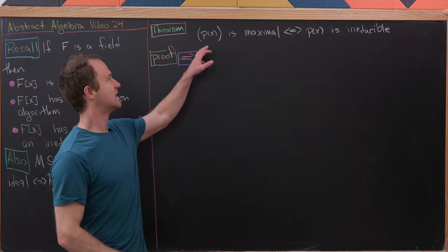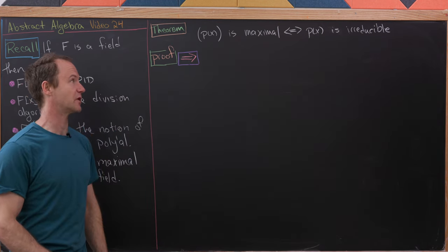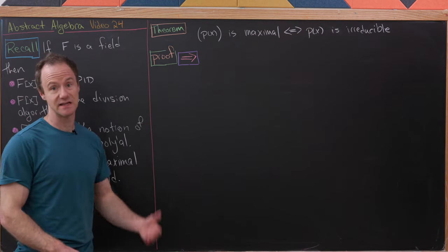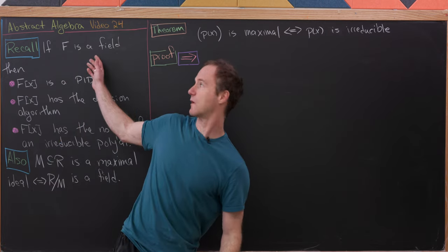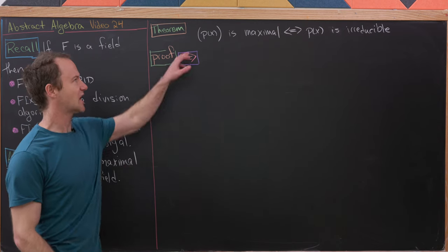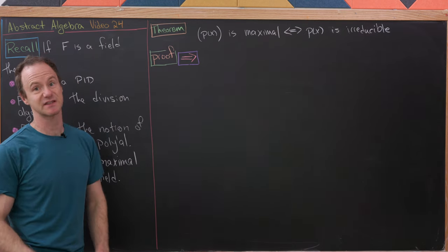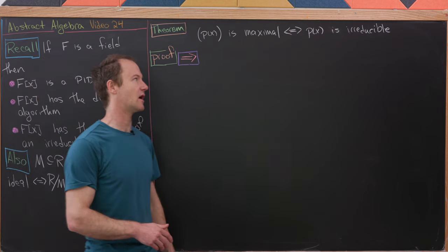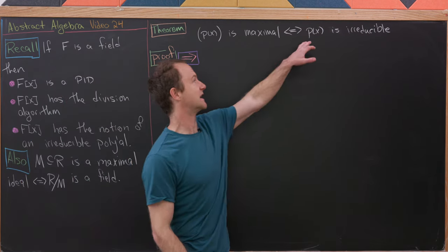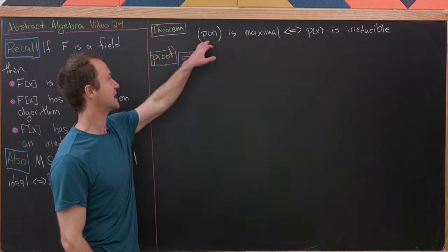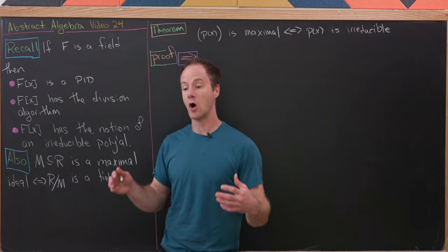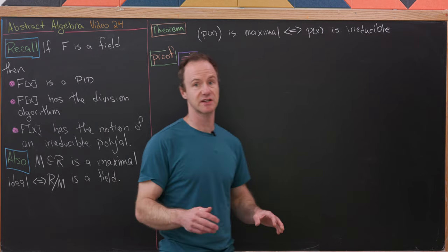Now let's look at our big result: the principal ideal generated by the polynomial P(X) is maximal if and only if P(X) is an irreducible polynomial — and we're working within F[X] throughout this video. Checking if an ideal is maximal is tricky, but checking irreducibility is more elementary. From an irreducible polynomial we get a maximal ideal, and quotienting gives a brand new field — a great way to construct new fields from old ones.